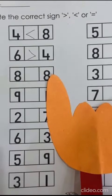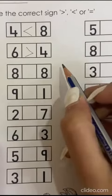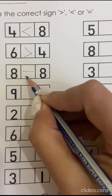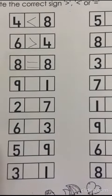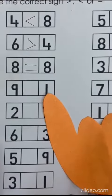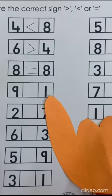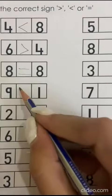8 and 8, same, yes. So we will put equals to, absolutely right. The next one, 9 and 1. 9 is big or 1 is bigger than 9? Absolutely, 9 is bigger than, greater than 1. So we are going to say,